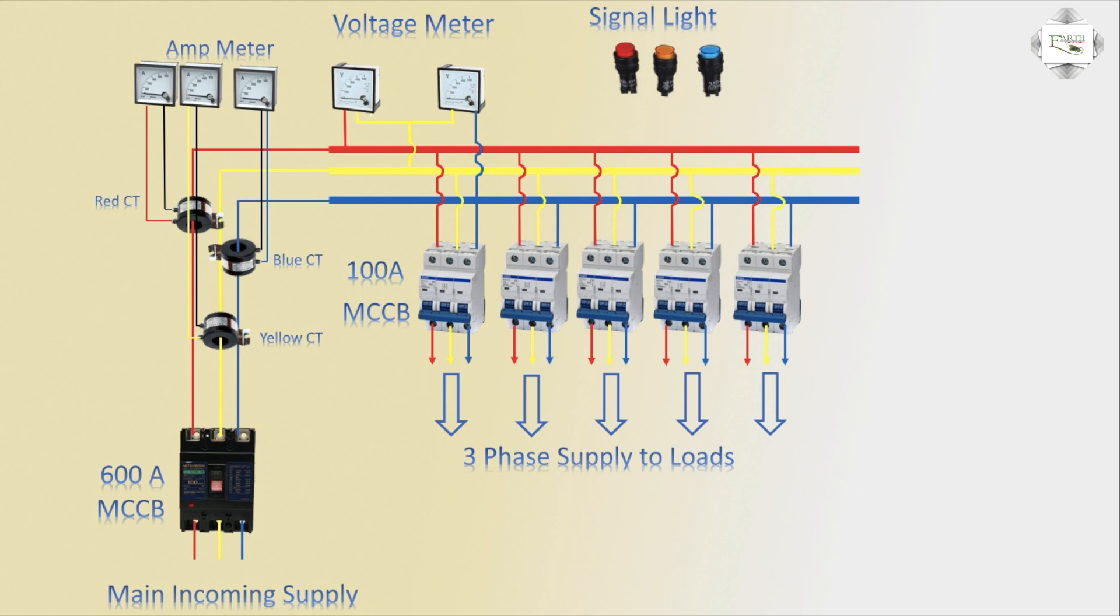The panel outgoing MCB includes neutral connections. The indicator light neutral uses three indicator lights with common neutral and phase connections to yellow and blue. This completes the simple three-phase panel board MCCB circuit diagram. Thank you.